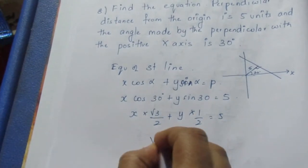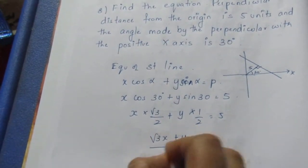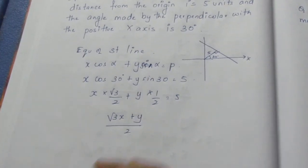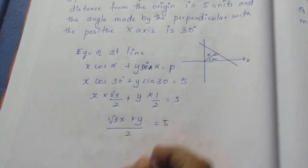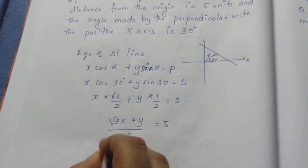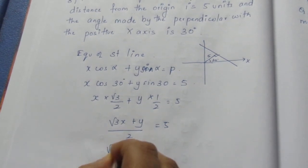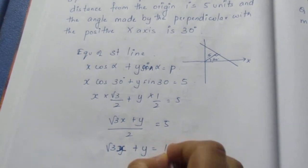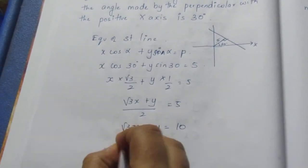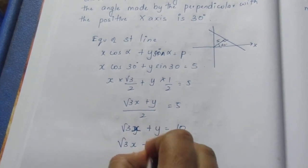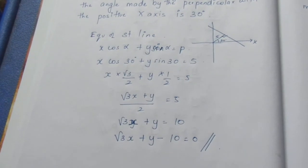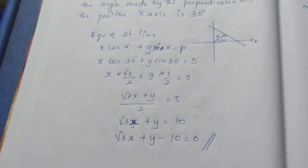This becomes (√3x + y)/2 = 5. Moving 2 to the other side by multiplying, we get √3x + y = 10. Bringing everything to one side, √3x + y - 10 = 0 is the required equation of the straight line.